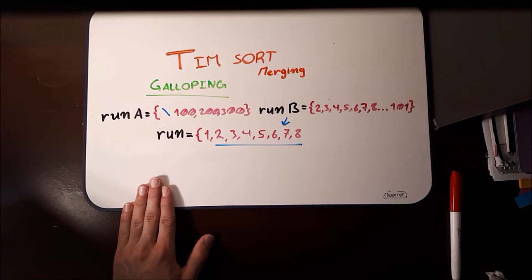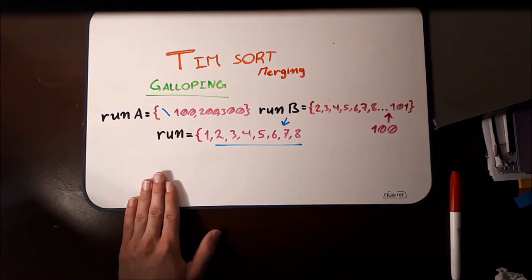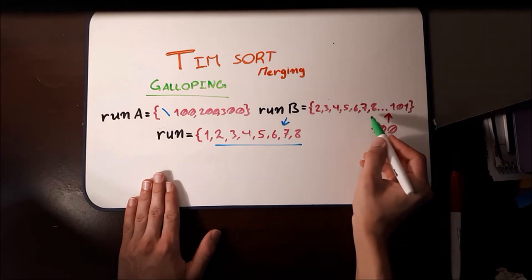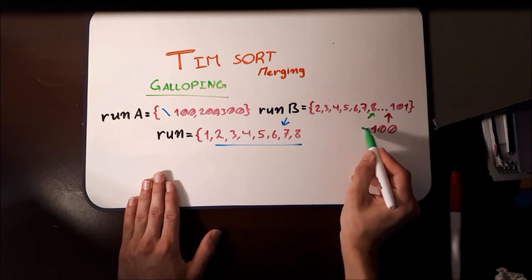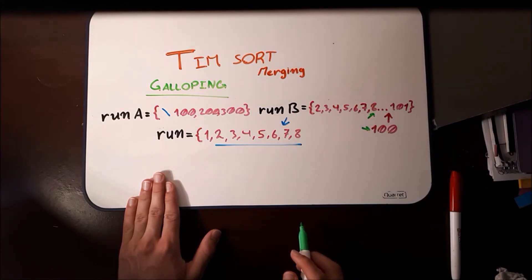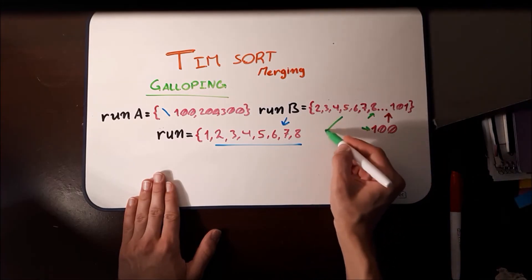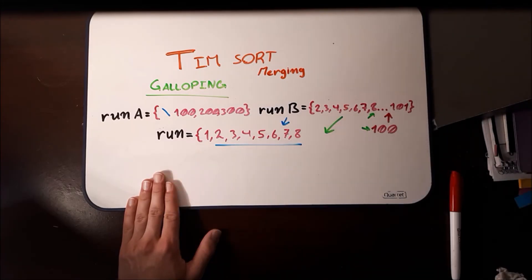it looks for the first element in run A, which is 100 here, and tries to find it in run B. So now it knows that everything between 8 and 100 in run B, that can all be directly copied over into the final run.